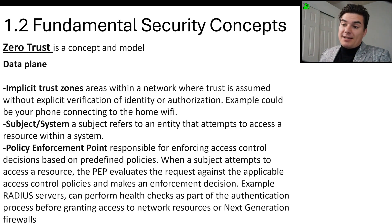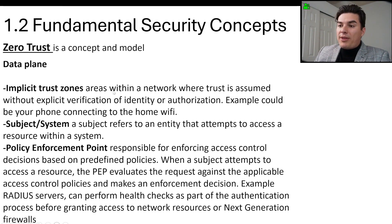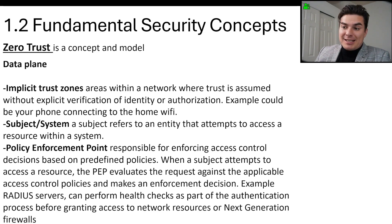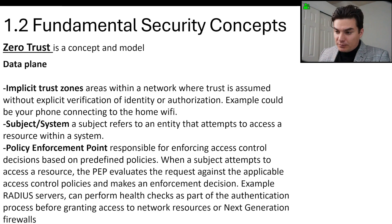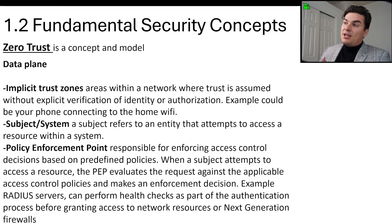The data plane is what actually forwards the information. There are implicit trust zones — areas within the network where trust is assumed without explicit verification of identity or authorization, such as your phone automatically connecting to your home Wi-Fi. The subject or system refers to an entity that attempts to access a resource. The policy enforcement point is responsible for enforcing access controls based on predefined policies — if a device like a cell phone lacks the latest security update required by policy, it won't be granted access to the network.